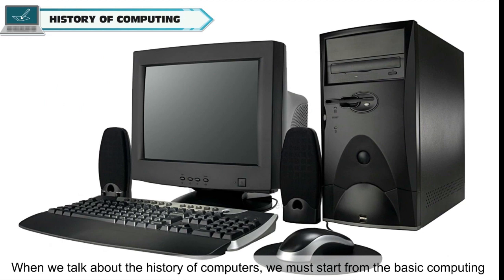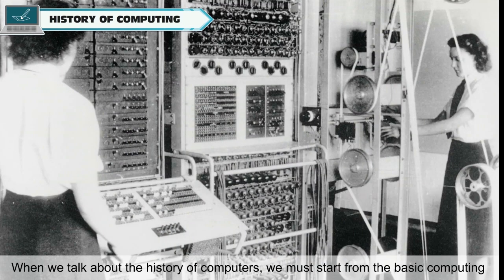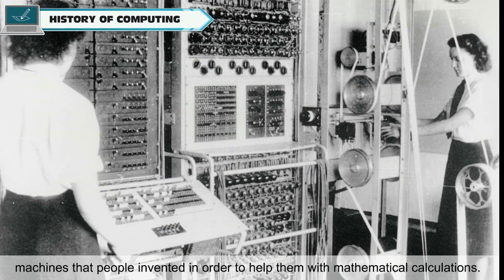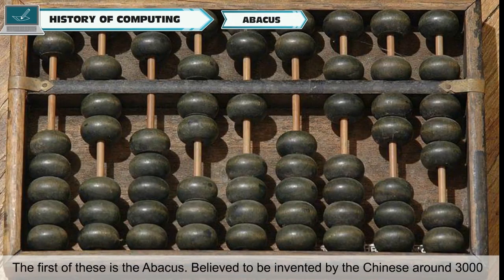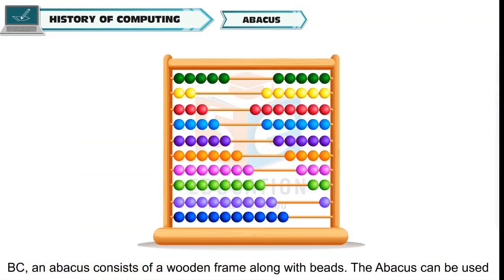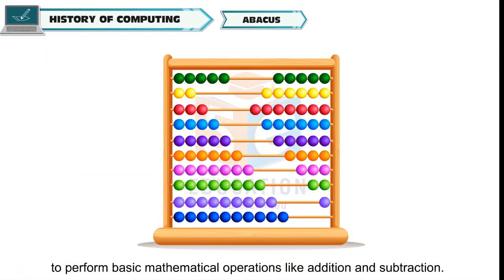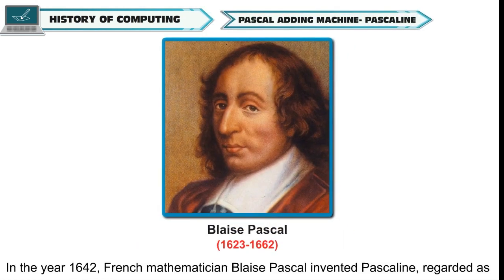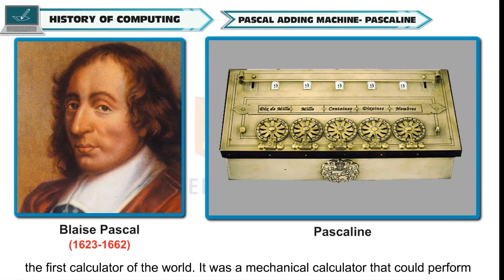When we talk about the history of computers, we must start from the basic computing machines that people invented to help them with mathematical calculations. The first of these is the abacus, believed to be invented by the Chinese around 3000 BC. An abacus consists of a wooden frame along with beads, and can be used to perform basic mathematical operations like addition and subtraction.